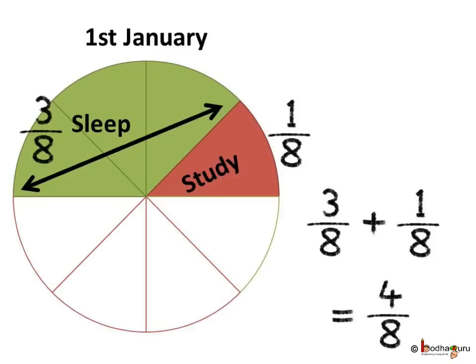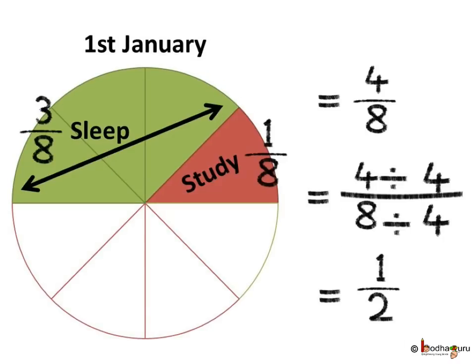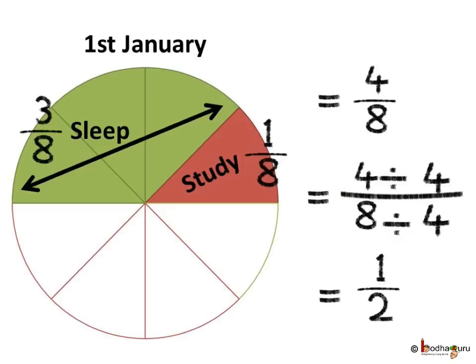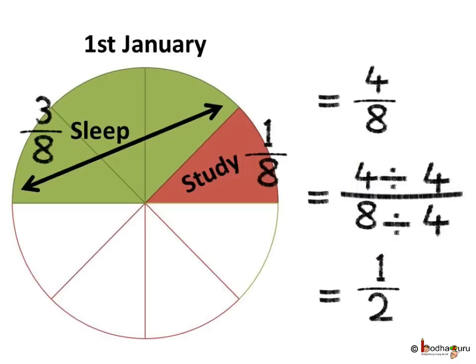Thus Khushi spent 4 by 8 parts of the day in sleep and study. Remember equivalent fractions? In 4 by 8, divide the numerator and denominator by 4. 4 divided by 4 is 1 and 8 divided by 4 is 2. So we get 1 by 2. 1 by 2 is the equivalent fraction of 4 by 8, which means 4 by 8 is the same as 1 by 2.